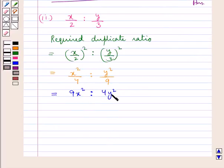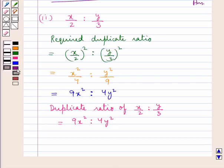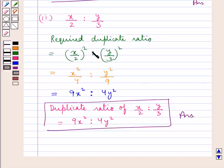So, this is the required duplicate ratio of x upon 2 is to y upon 3 is equal to 9x square is to 4y square. This is the answer for the second part of the question.